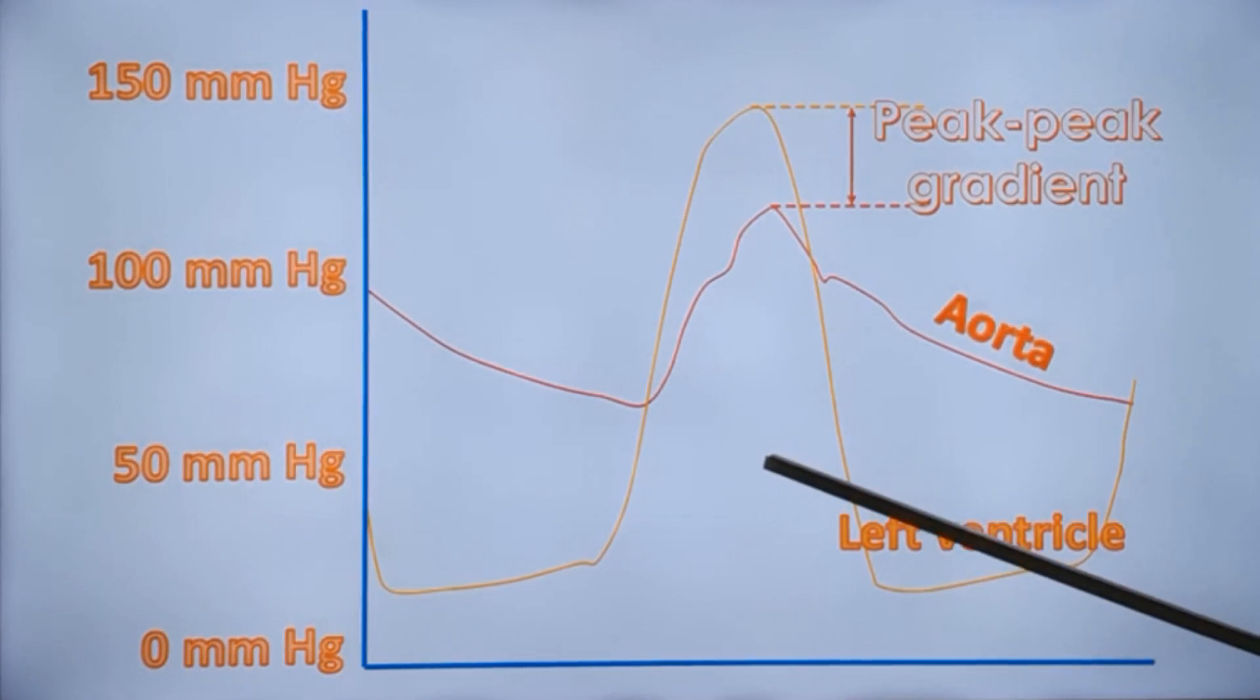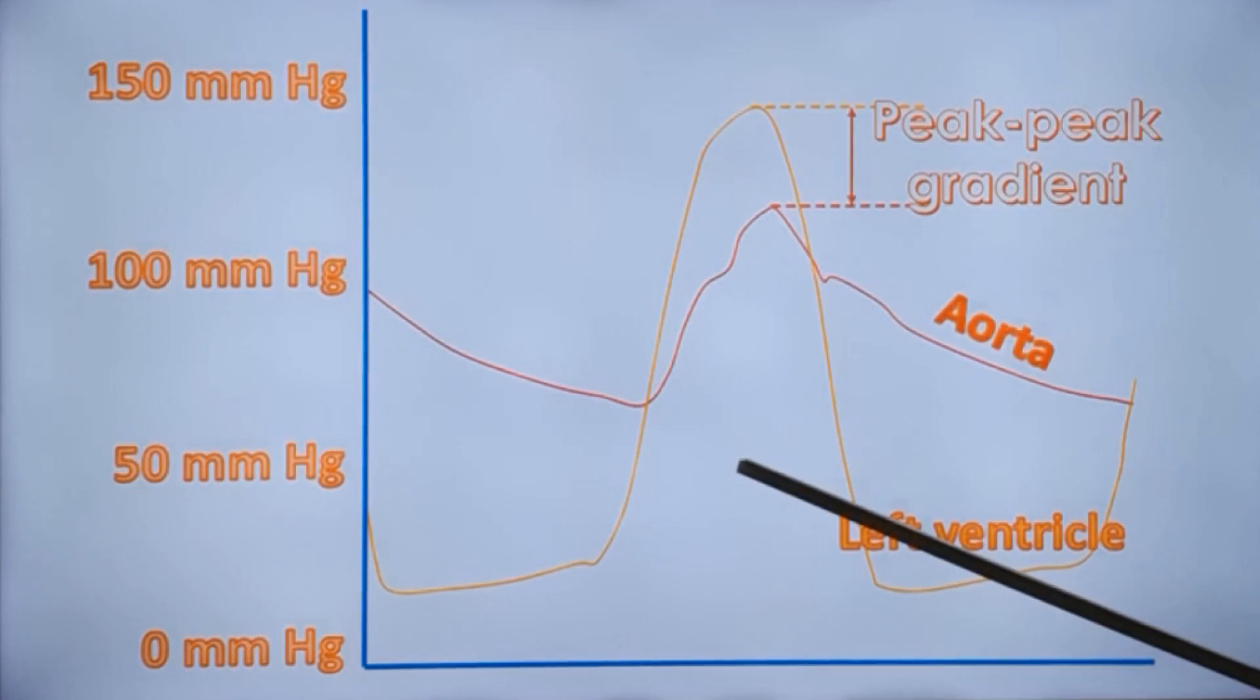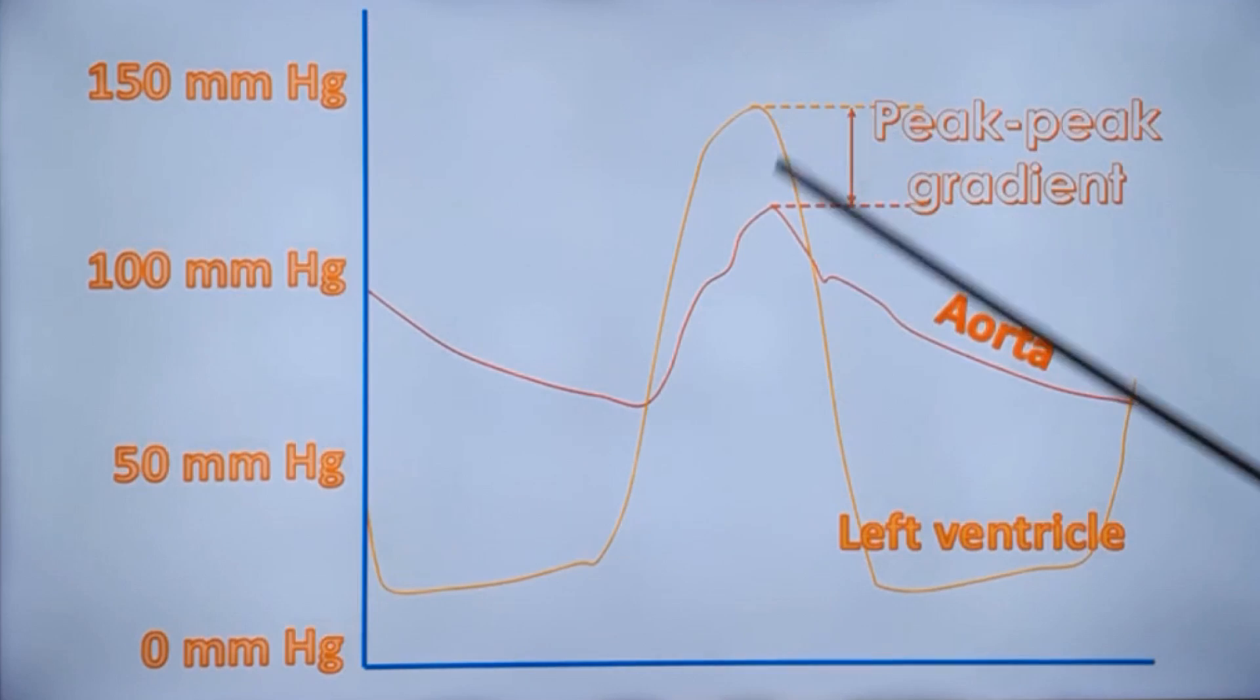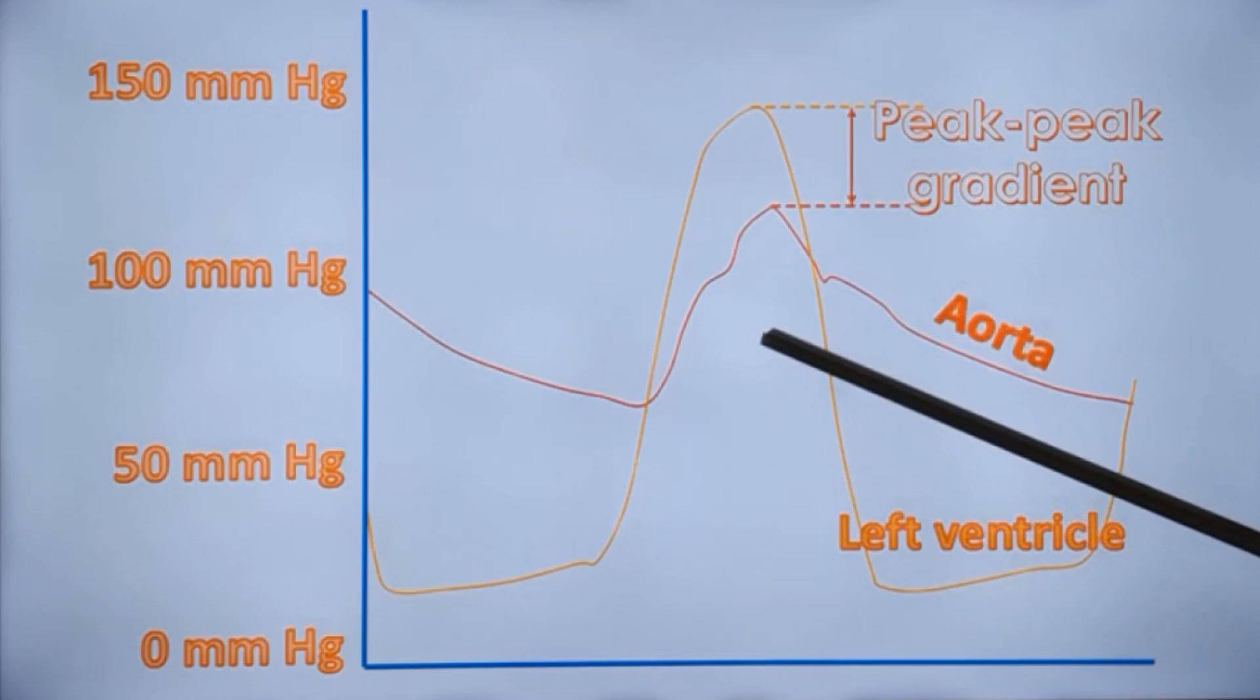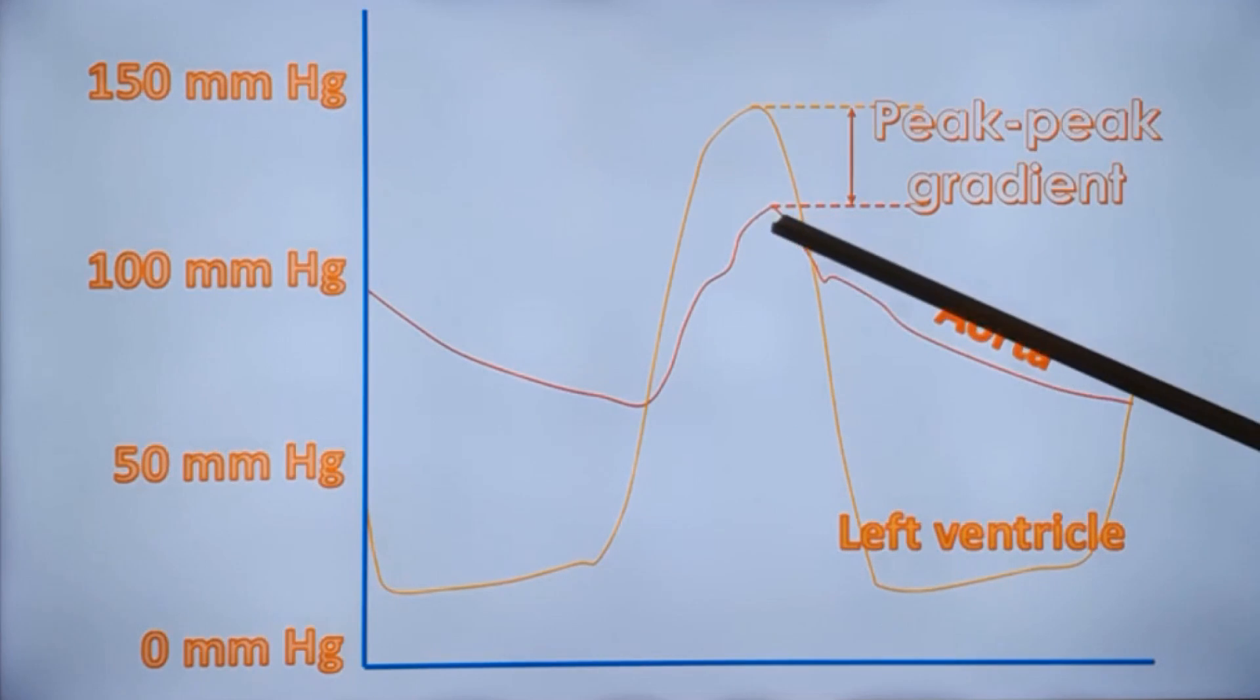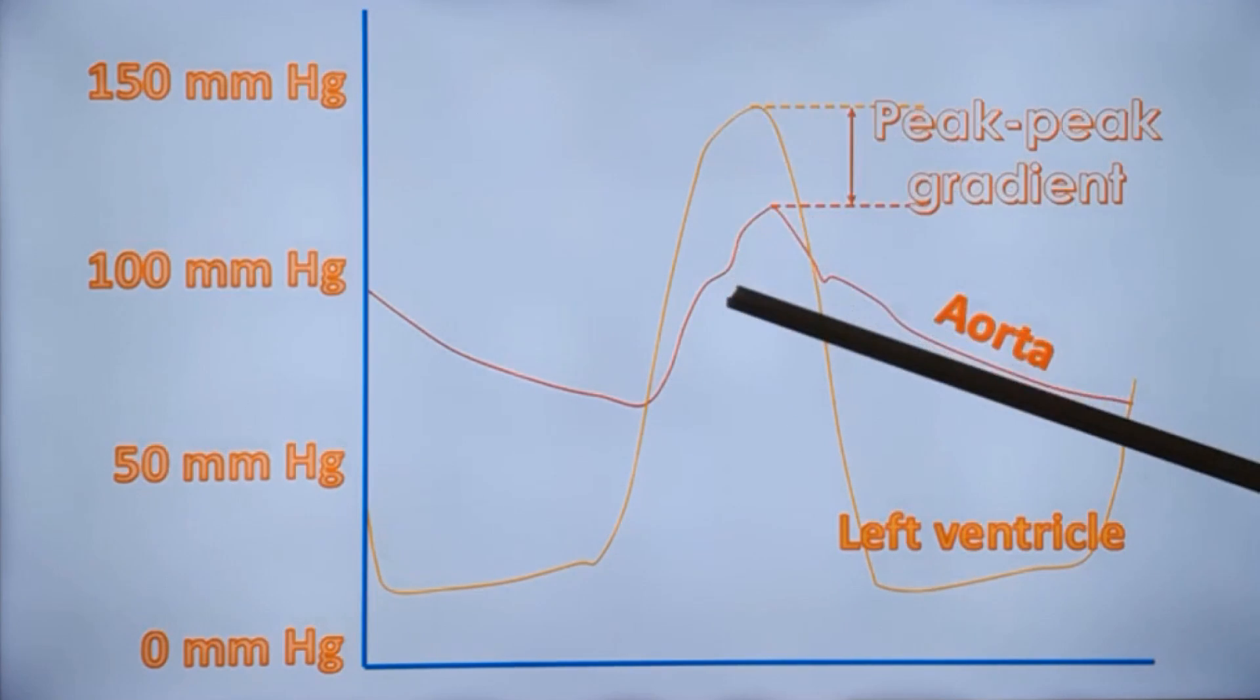When you get a Doppler gradient in echocardiography, it will not correspond to this peak-to-peak gradient. It will be the peak instantaneous gradient. For example, if you look at these tracings, you can know that this is not the actual peak instantaneous gradient.